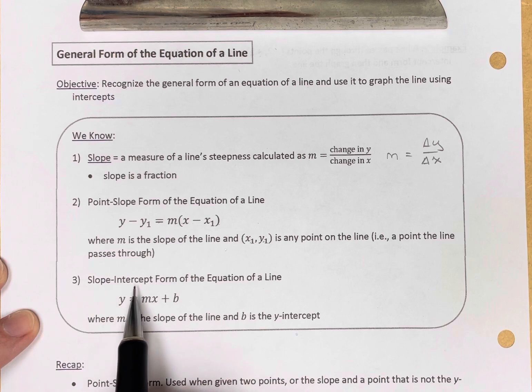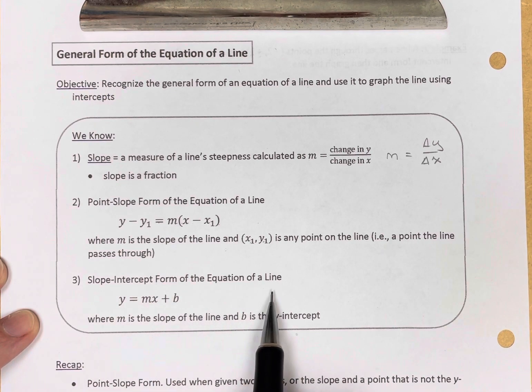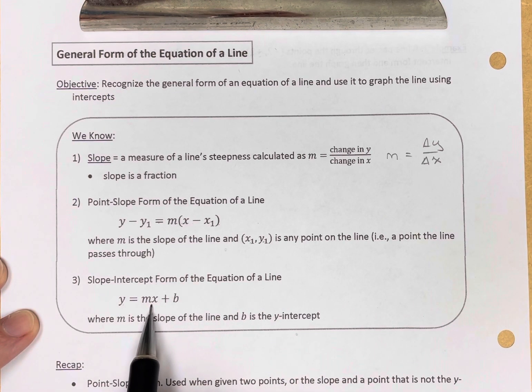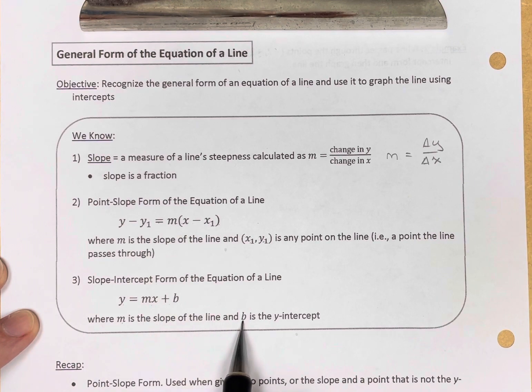And finally, we know the slope-intercept form of the equation of a line. It is y equals mx plus b. m is the slope, and in this case, b is the y-intercept, where the line crosses the y-axis.